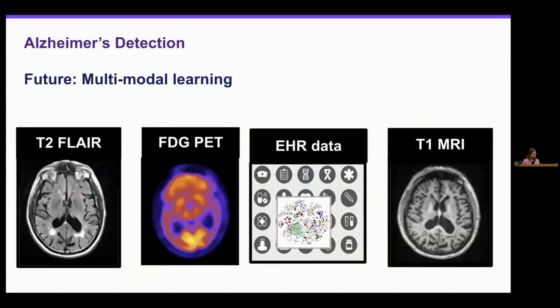In the future, their team is also looking towards multimodal learning. While the results shown involve predicting Alzheimer's from T1 structural MRI, their goals moving forward are to incorporate different MRI contrasts, PET, as well as electronic health record data.